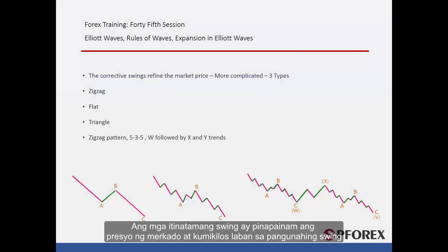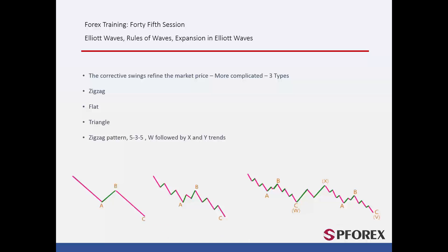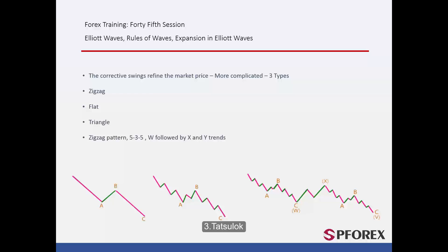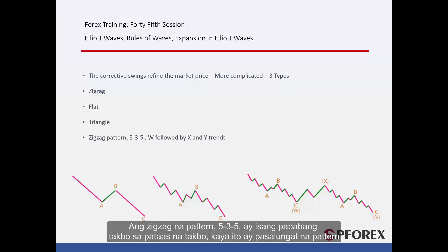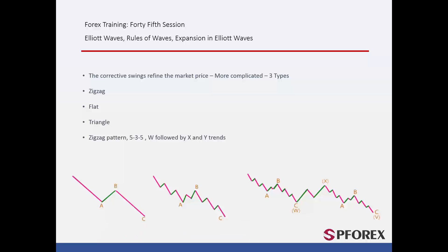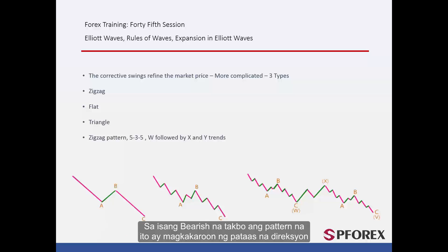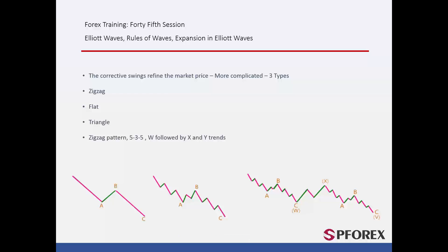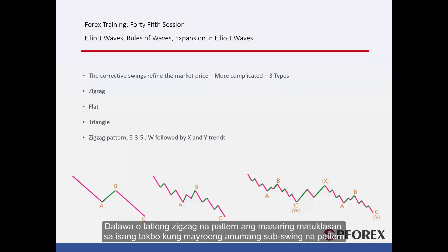The corrective swings refine the market price and move against major swings. The corrective swings require more consideration due to their complexity. There are three types of corrective swings: zigzag, flat and triangle. A zigzag pattern (5-3-5) is a downward trend on an uptrend — thus it is a reversal pattern. On a bearish trend, this pattern will have an upward direction. Two or three zigzag patterns can be detected in a trend if there is a sub-swing pattern. The first trend is W, followed by X and Y trends.